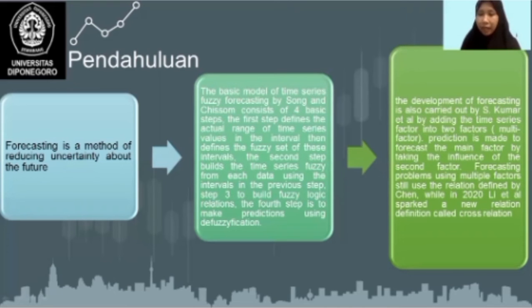Forecasting problems using multiple factors still use the relation defined by Chen. This year, Lee et al sparked a new relation definition called cross relation, and in this paper we use SCAFLR to modify the definition of Chen.